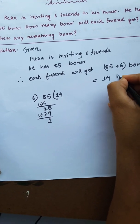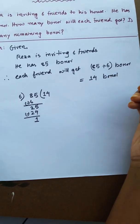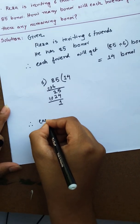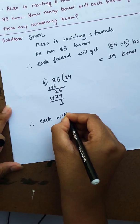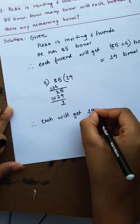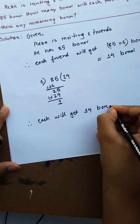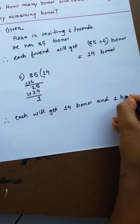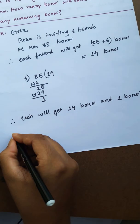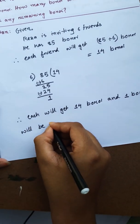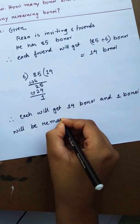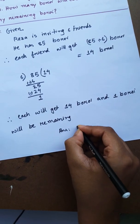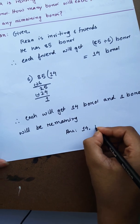I have written 14. Therefore, each friend will get 14 boroy, and 1 boroy will be remaining. So the answer is: 14 boroy each, with 1 remaining.